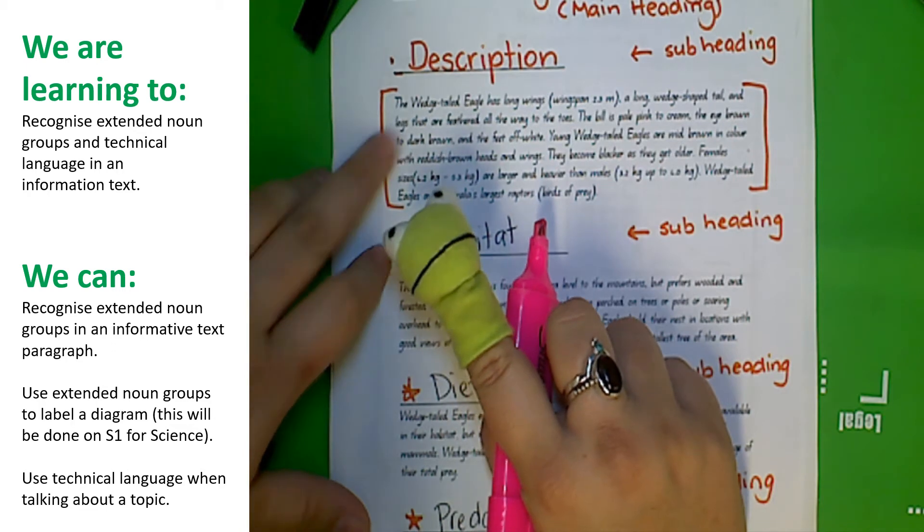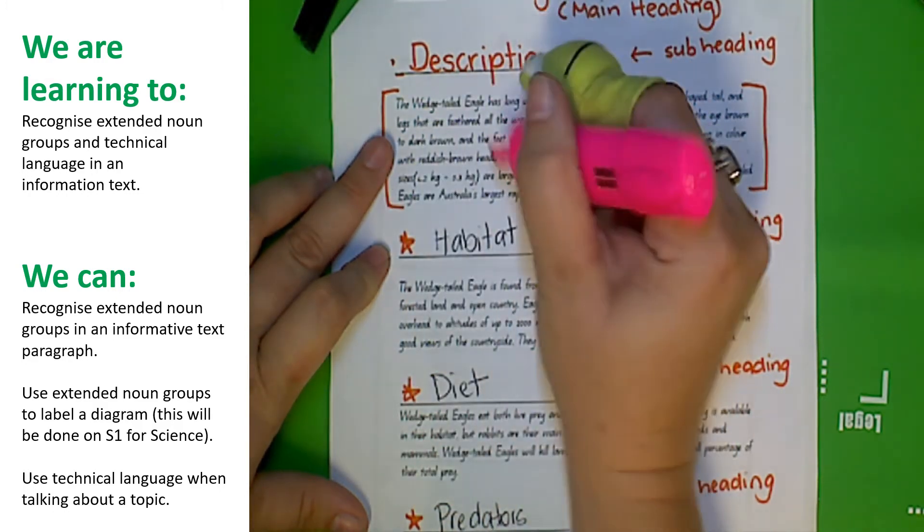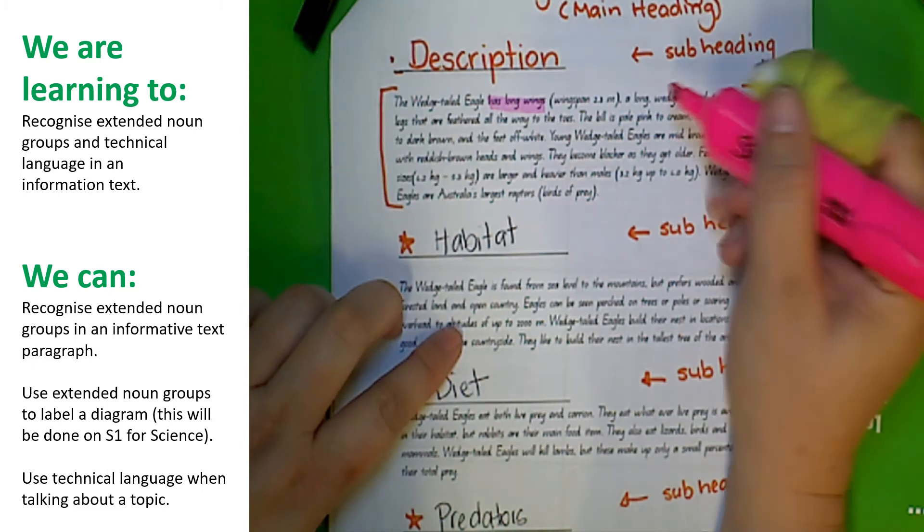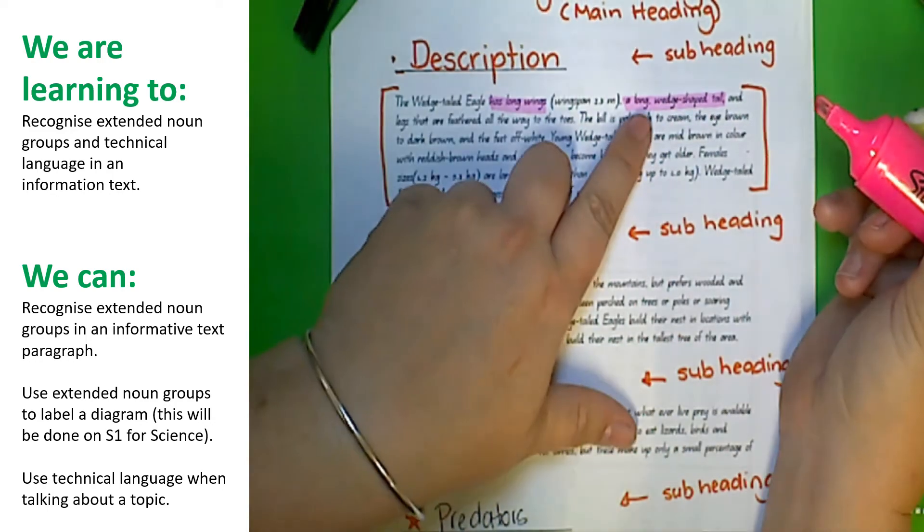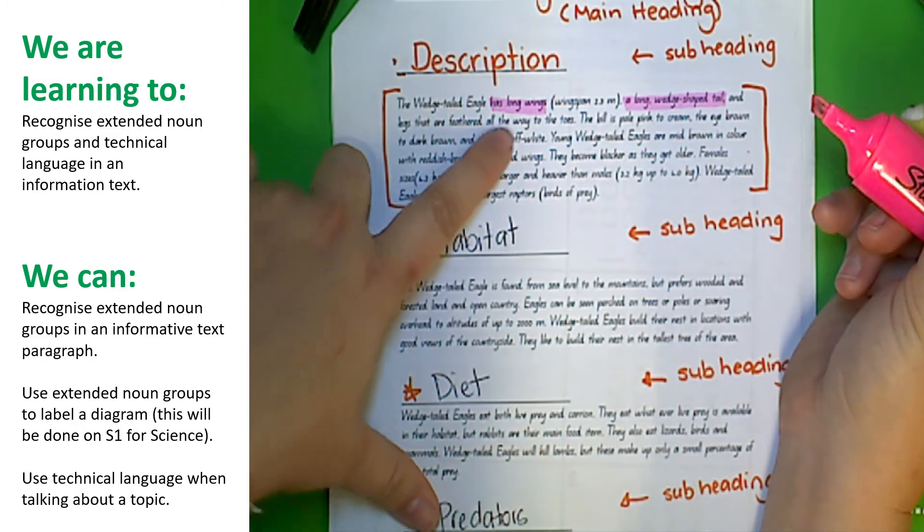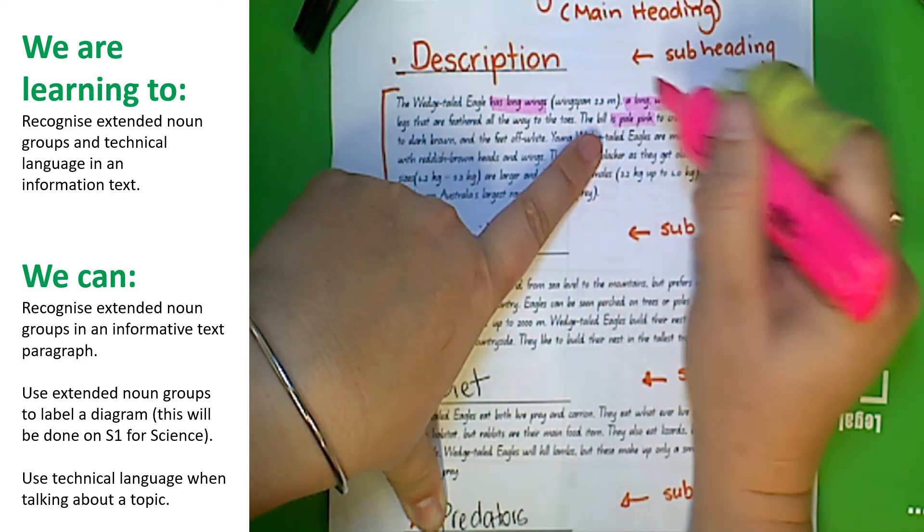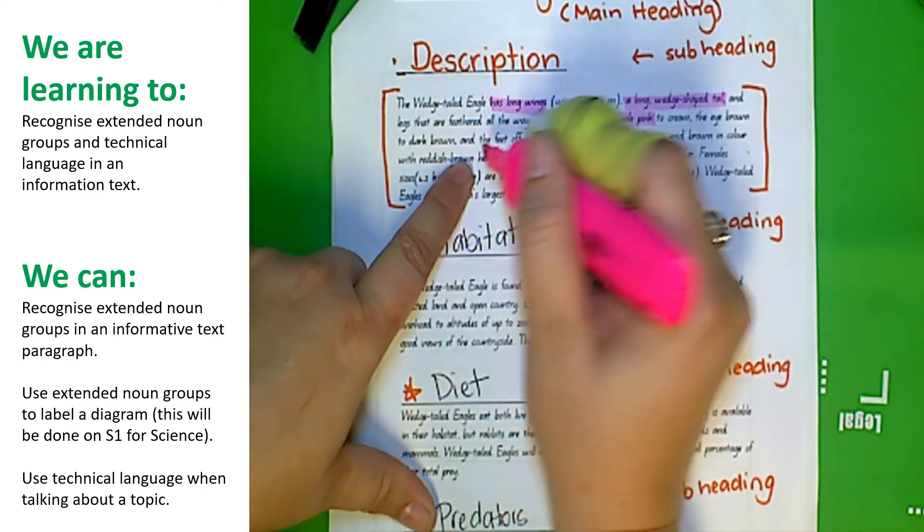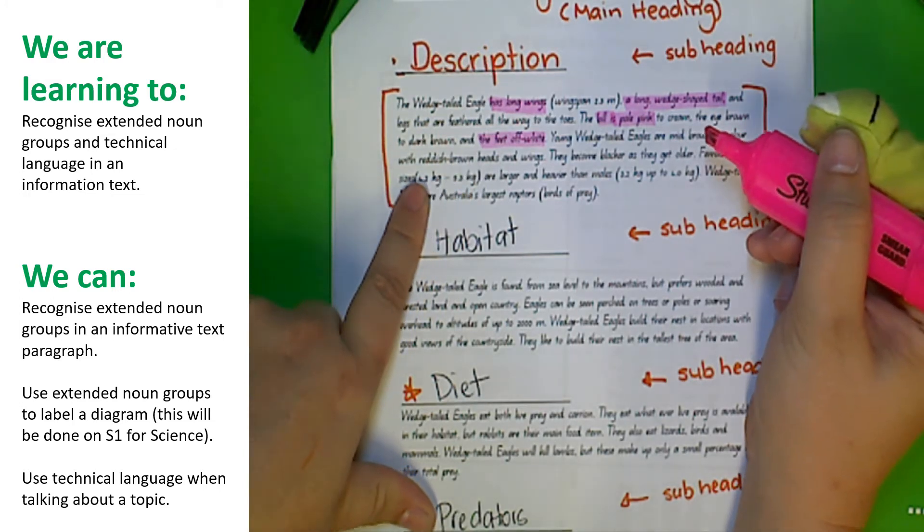I'll do this paragraph. The wedgetail eagle has long wings. Wing is a noun group, it's only got the one adjective before the noun. A long wedge-shaped tail - that one is an extended noun group because it's got two adjectives before the noun. And legs that are feathered all the way to the toes. The bill is pale pink, so it is pale pink and it's describing the bill. The eyes are brown to dark brown and the feet are off-white.